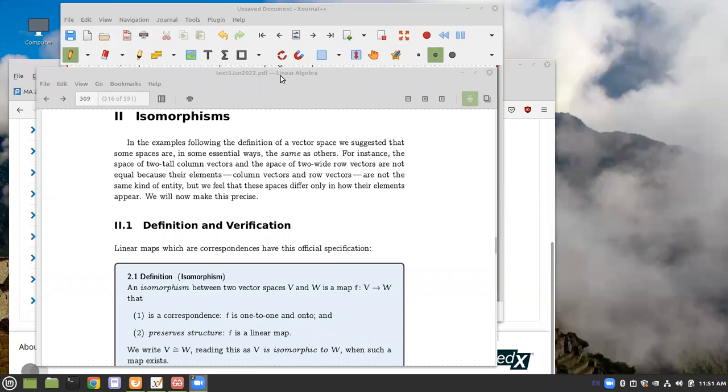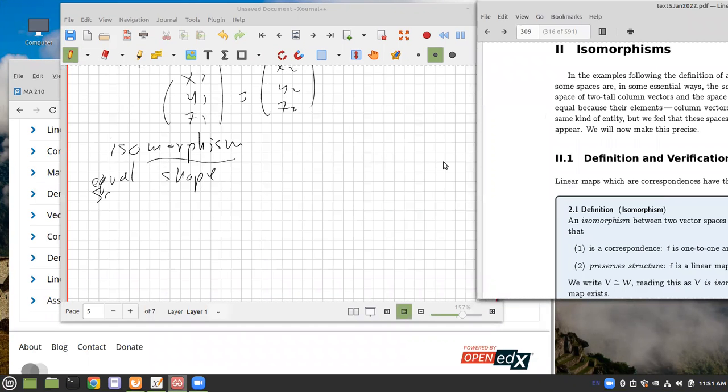Now I'm recording again. Now I see what's going on. So we're dealing with isomorphisms, which the word means same shape. And an isomorphism basically means that the vector spaces are essentially identical.